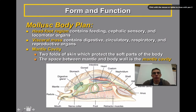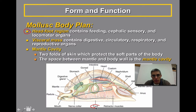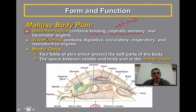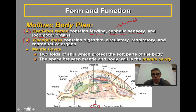When you look at the basic body plan of a mollusk, you'll notice it has three basic parts. The first part is the head-foot region. Looking at this generalized example of a mollusk, the foot is down here towards the bottom, and the head is this area right here — both combined are considered the head-foot region. This region is going to contain body parts involved with feeding, most of the cephalic sensory organs — cephalic meaning head — and the locomotor organs used to help the animal move. The second part is the visceral mass, which contains the digestive system, circulatory system, respiratory system, and many of the reproductive organs.